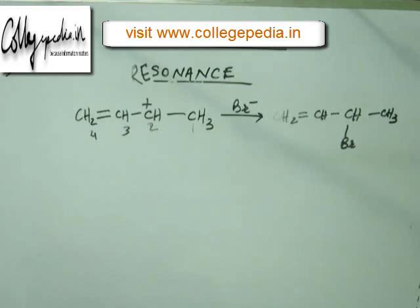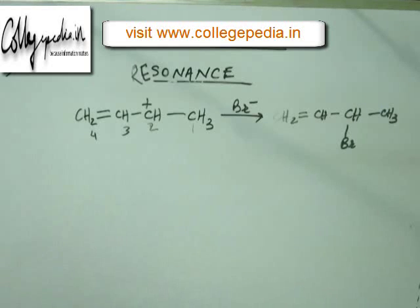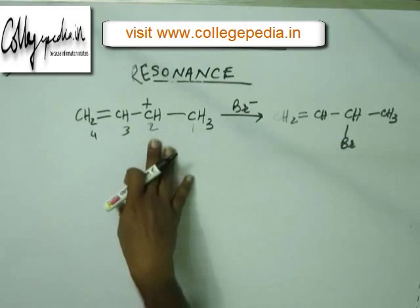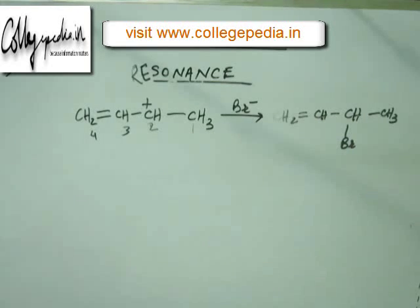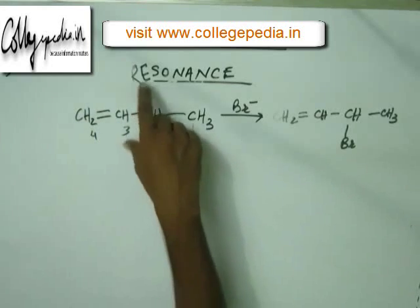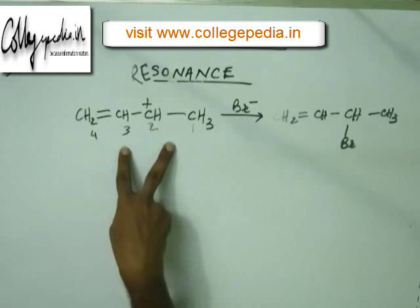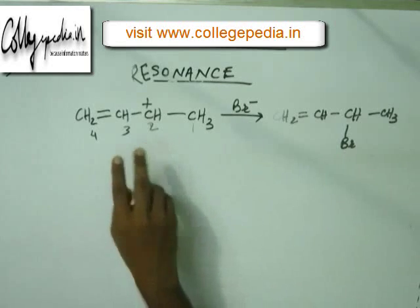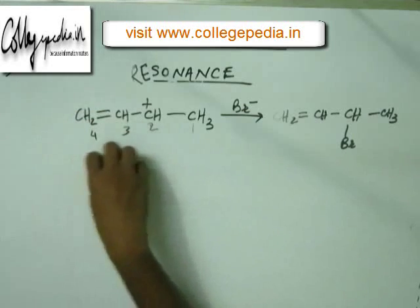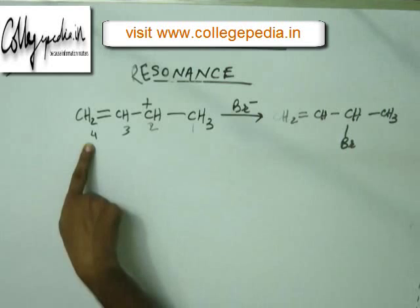That compound will be 3-bromo-but-1-ene. So this is one of the compounds formed as a result of this reaction. But this is not the only compound that will be formed, because the charge seems to be at C2 — but after studying resonance we understand very well that the charge is not static at C2. There is an electronic high pressure between C4 and C3 and an electronic vacuum at C2, so the system is unstable. What will happen is that electronic density between C3 and C4 will move towards C2 and the charge will develop on C4.